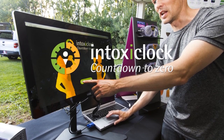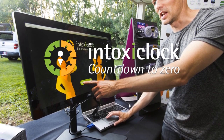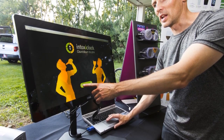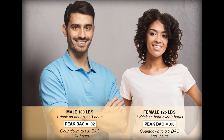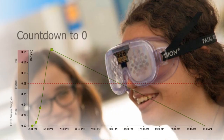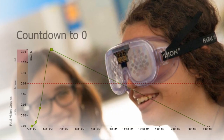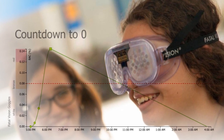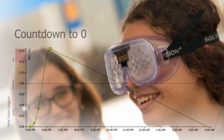The following video is a demonstration of the IntoxiClock Pro software program. The IntoxiClock Pro software illustrates how a person's weight, gender, drink of choice, and consumption rate determine a person's blood alcohol concentration level and how long it takes to metabolize that alcohol to zero BAC.